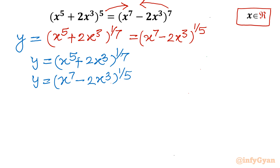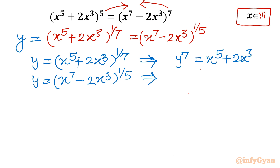Now I will write the equations without rational powers. The first equation becomes y⁷ = x⁵ + 2x³, and the second equation becomes y⁵ = x⁷ - 2x³.